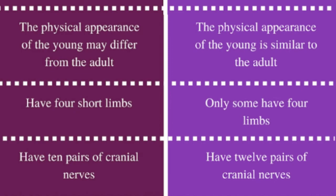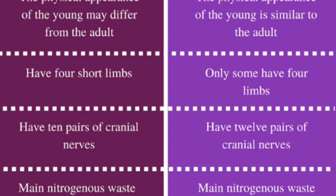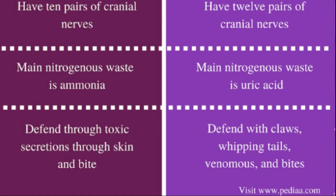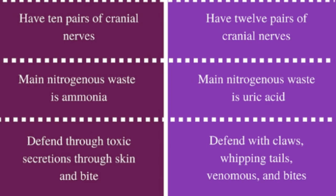Amphibians have four short limbs, while reptiles — only some — have four limbs. Amphibians have ten pairs of cranial nerves and reptiles have twelve pairs of cranial nerves. In amphibians the main nitrogen waste is ammonia, while in reptiles it is uric acid. Amphibians defend through toxic secretions through the skin and biting, while reptiles defend with claws, whipping tails, venom, and bites.